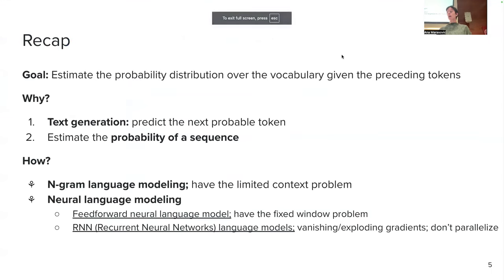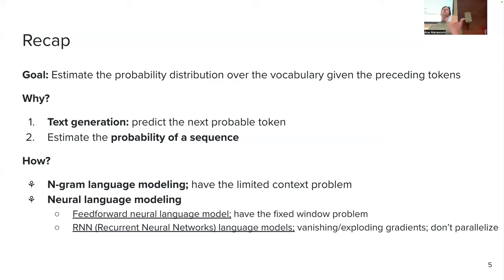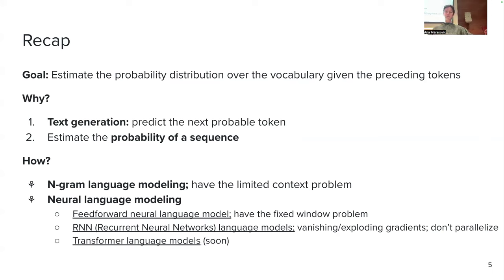So those are our neural language models. For feed-forward networks, not much has changed conceptually from what you already know. One thing that's conceptually different: previously you classified into two classes (positive or negative), now you're classifying into as many classes as tokens in the vocabulary — potentially 30,000 classes. But mathematically, the operations are the same: linear transformation, ReLU, another linear transformation into number of classes, softmax, and probability distribution.